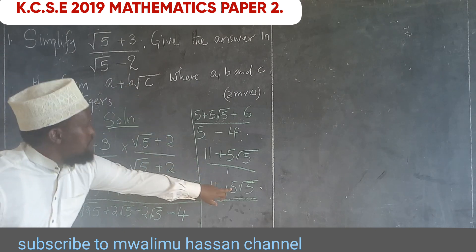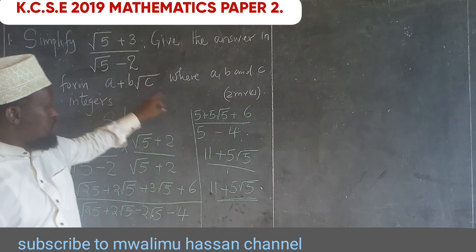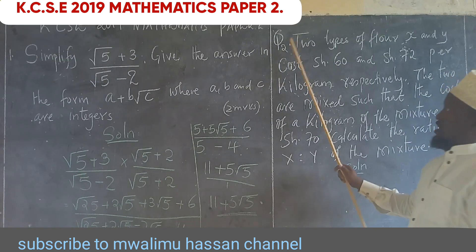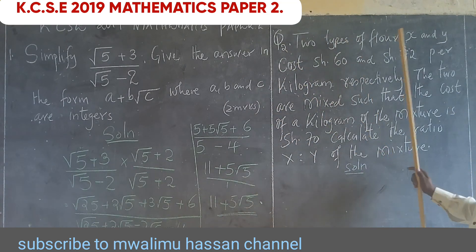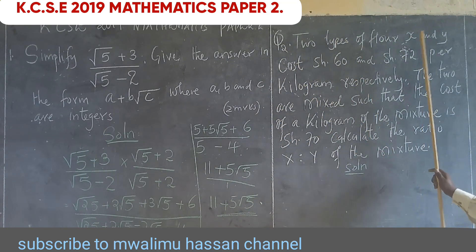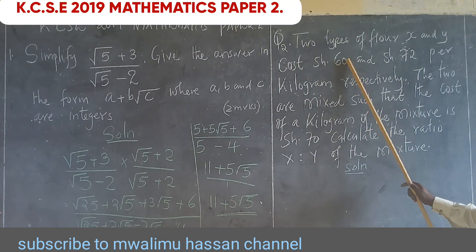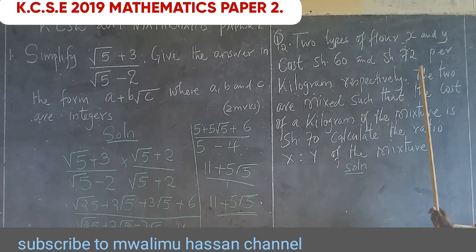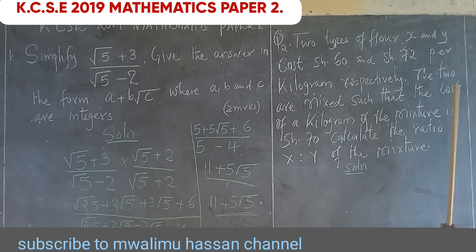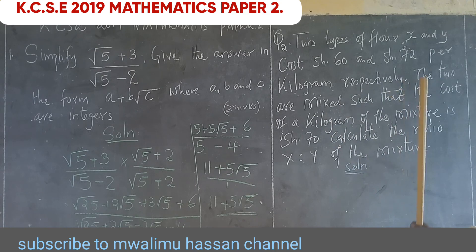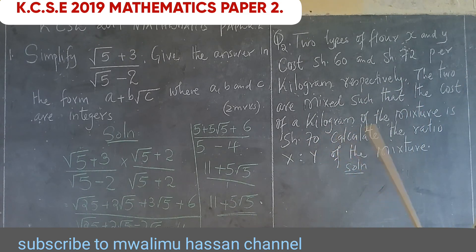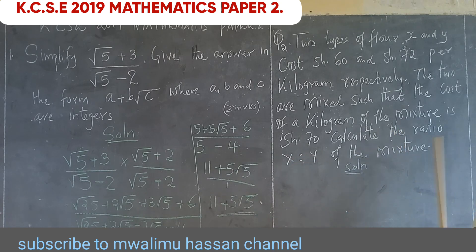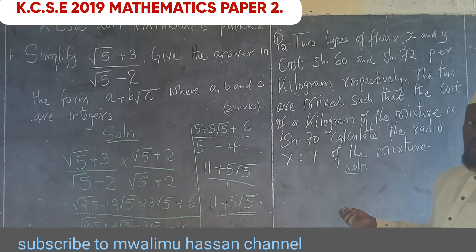Question 2: Two types of flour X and Y cost 60 and 72 shillings per kilogram respectively. The two are mixed such that the cost of a kilogram of the mixture is 70 shillings. Calculate the ratio X to Y of the mixture.